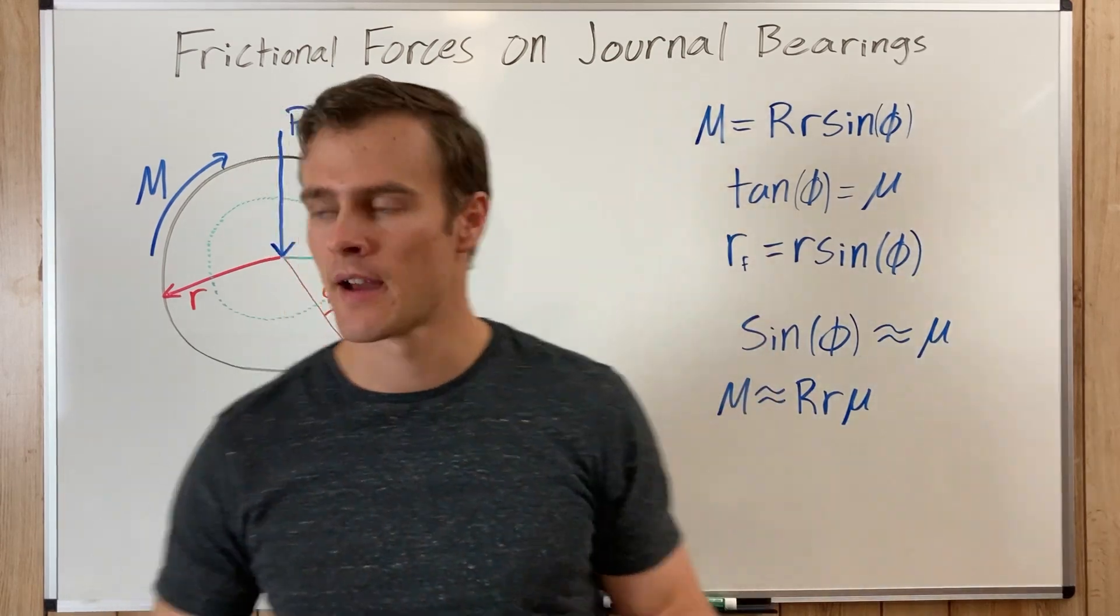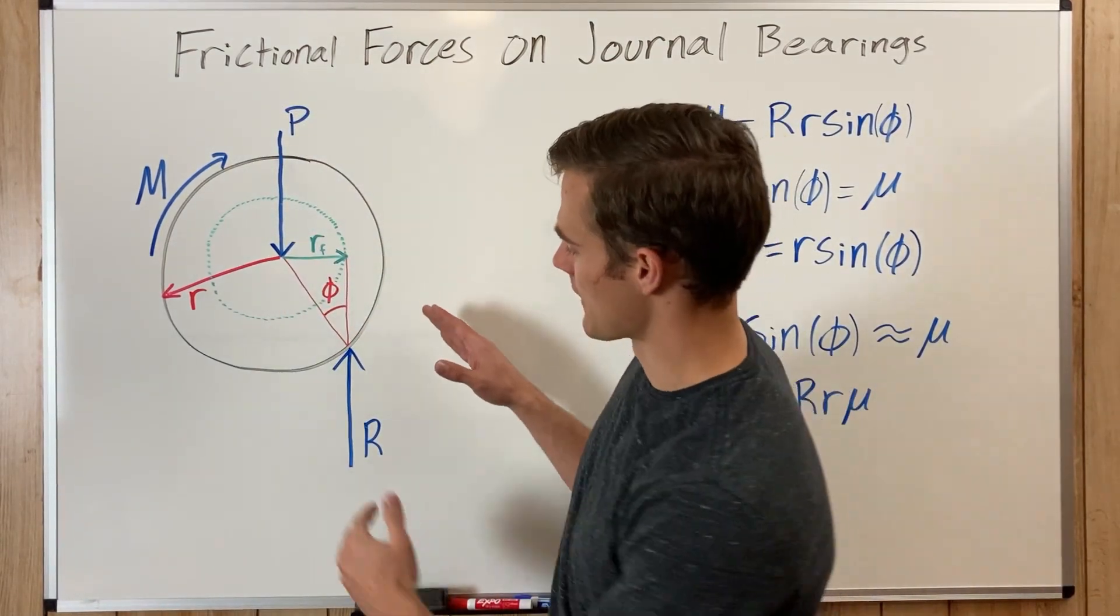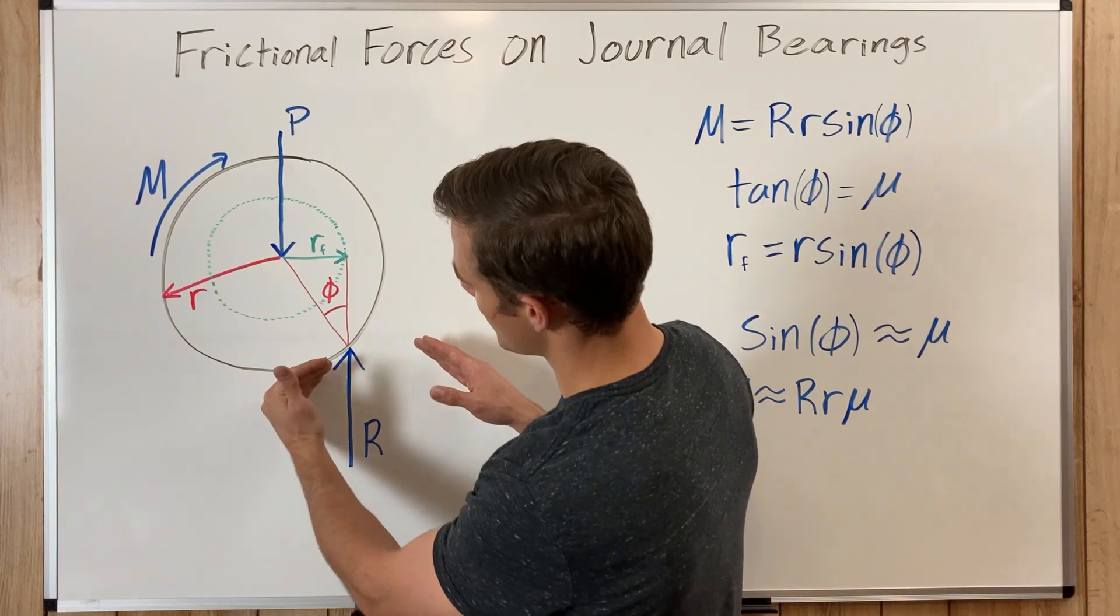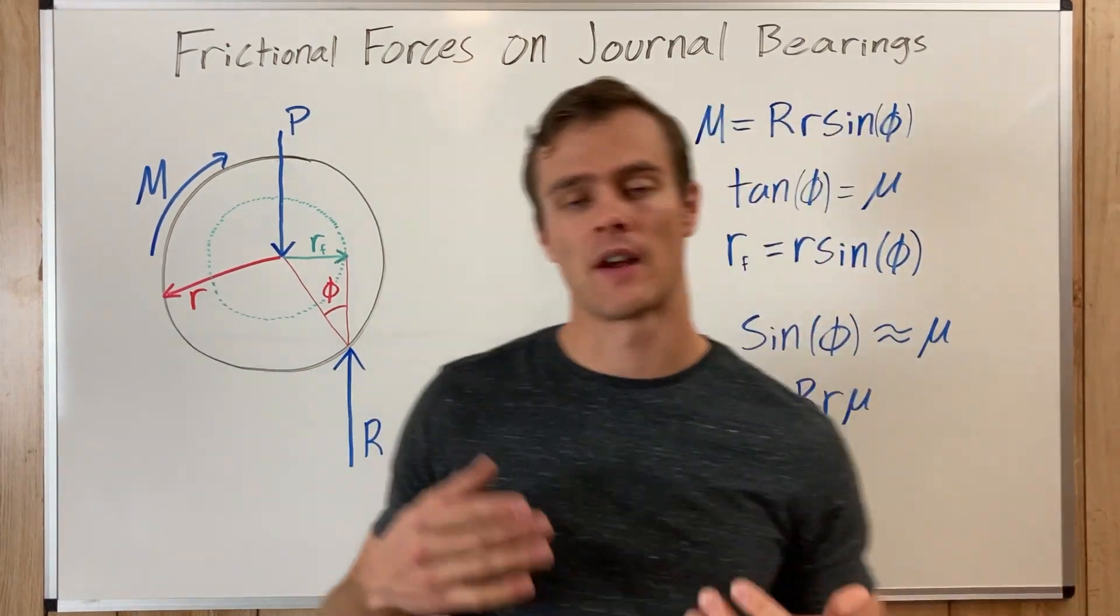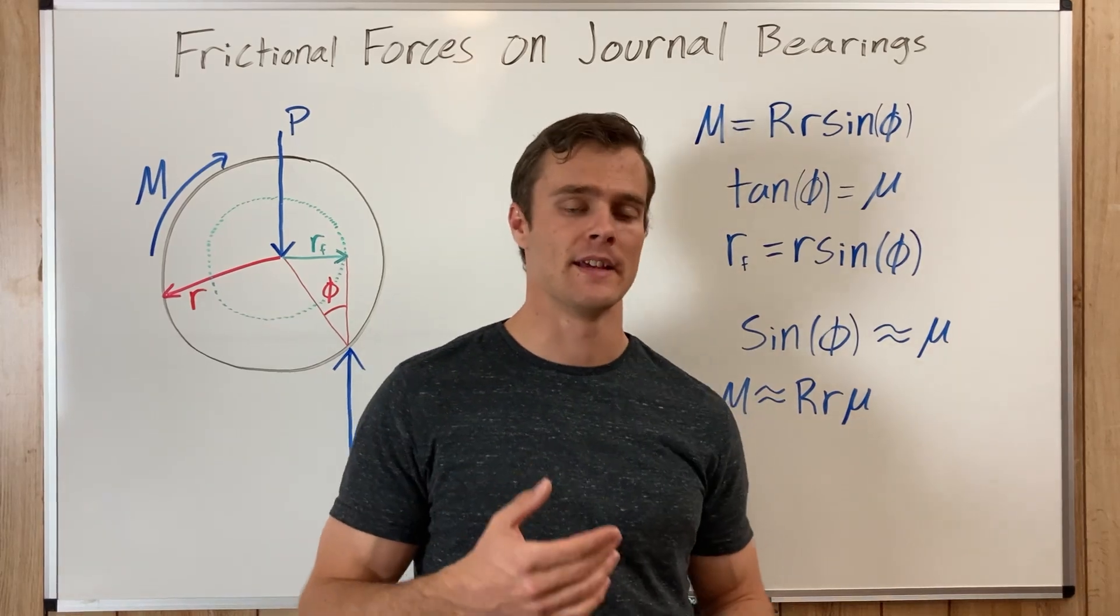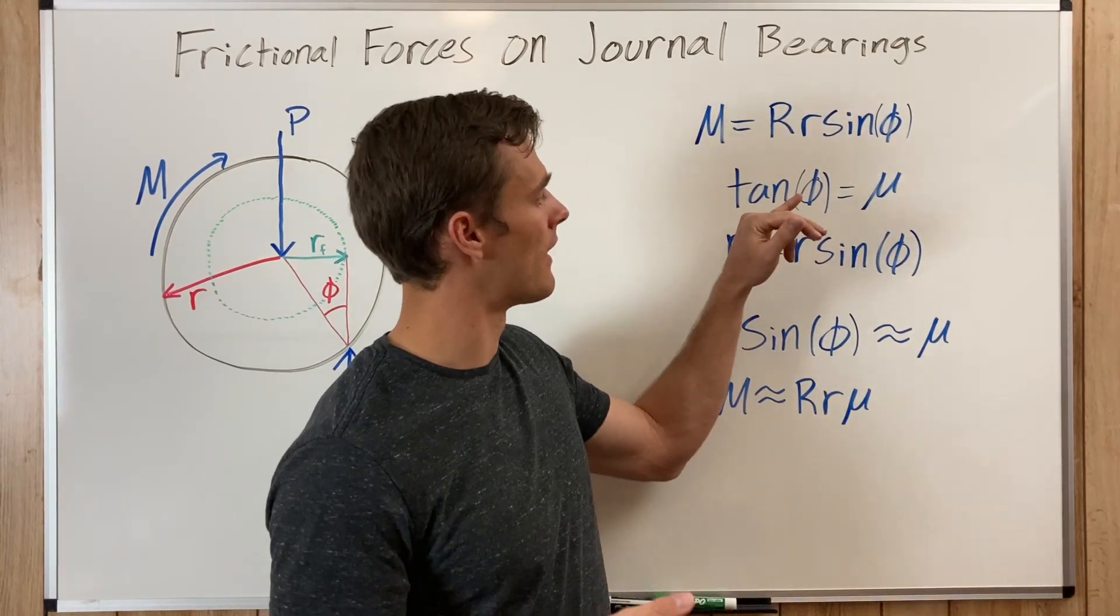Now I'm not going to go into the derivation of that, but it basically comes from there's a frictional force here that is tangent to the circle and a normal force there, and the friction divided by the normal force is mu, and that's where you get that equation.